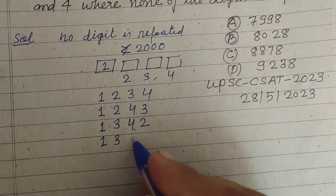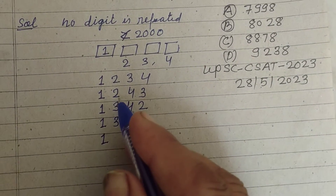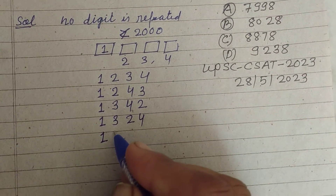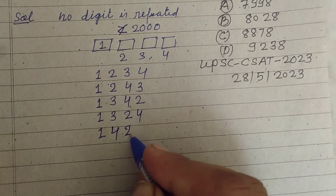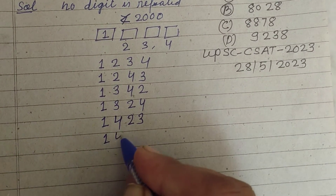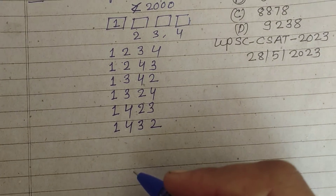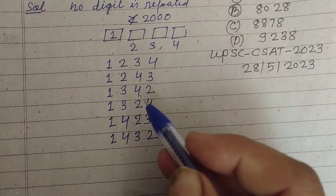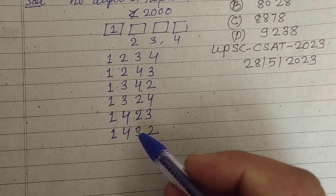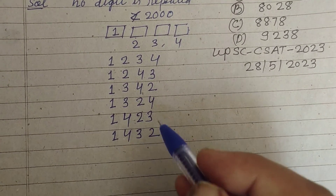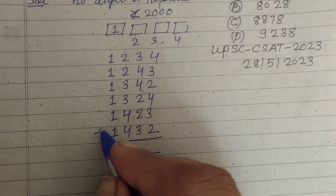We now have all six four-digit numbers with 1 fixed at the thousands place and digits 2, 3, 4 arranged in all possible ways in the remaining places. So the total count of numbers formed is six.